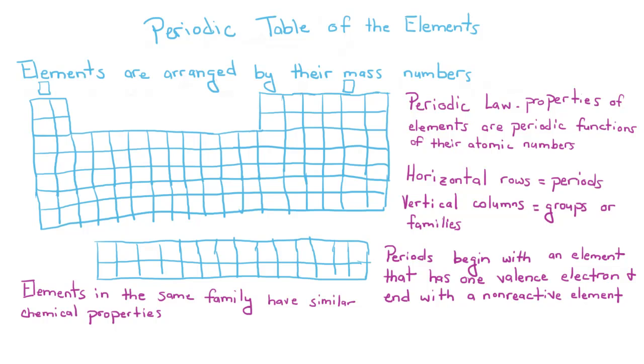A list of elements and all of their properties can be found on what is called the periodic table. Elements are going to be arranged by mass numbers and there are a couple of properties of the periodic table. We start off with the periodic law.